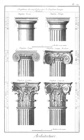Compluvium: Latin term for the open space left in the roof of the atrium of a Roman house (domus) for lighting it and the rooms around.